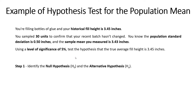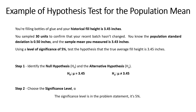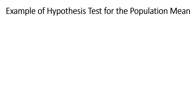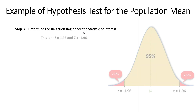Using a significance level of 5%, test the hypothesis that the true average fill height is equal to 3.45 inches. Step one: identify the null and alternative hypothesis. In this scenario, we want to prove that our mean value hasn't changed — that it's still equal to the historical fill height of 3.45 inches — so we go with a two-tail test, spreading our rejection region across two tails. Step two: the significance level is given in the problem statement — it's 5%. Step three: with a 5% significance level on a two-tail test, the z-scores of minus 1.96 and positive 1.96 form the boundaries of our rejection region.